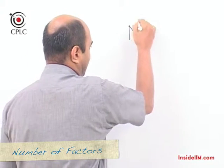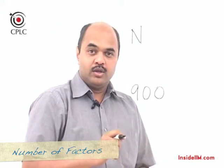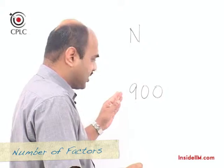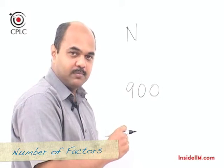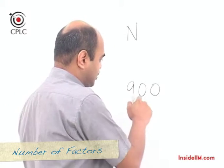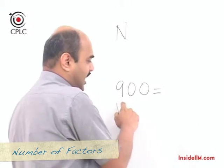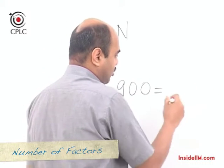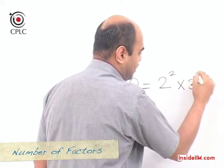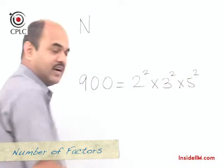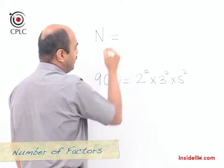Suppose we take an example of the number N as 900. To calculate the number of factors for 900, our first step would be to split up this number in terms of its prime factors. If we factorize 900, it becomes 9 multiplied by 100, and when written in terms of prime factors, it is 2² × 3² × 5².